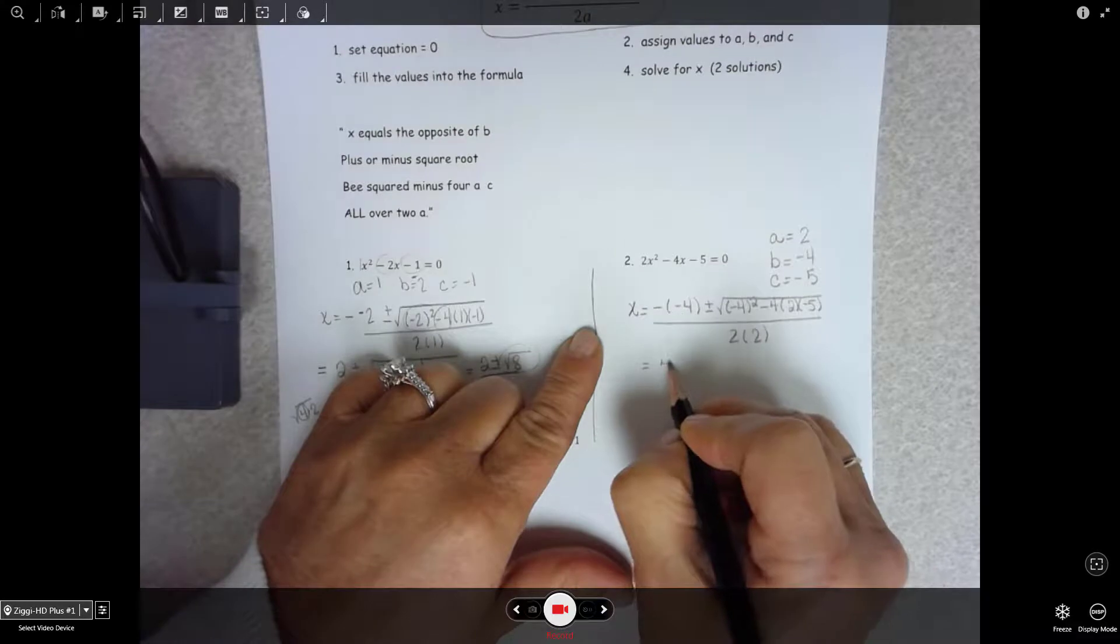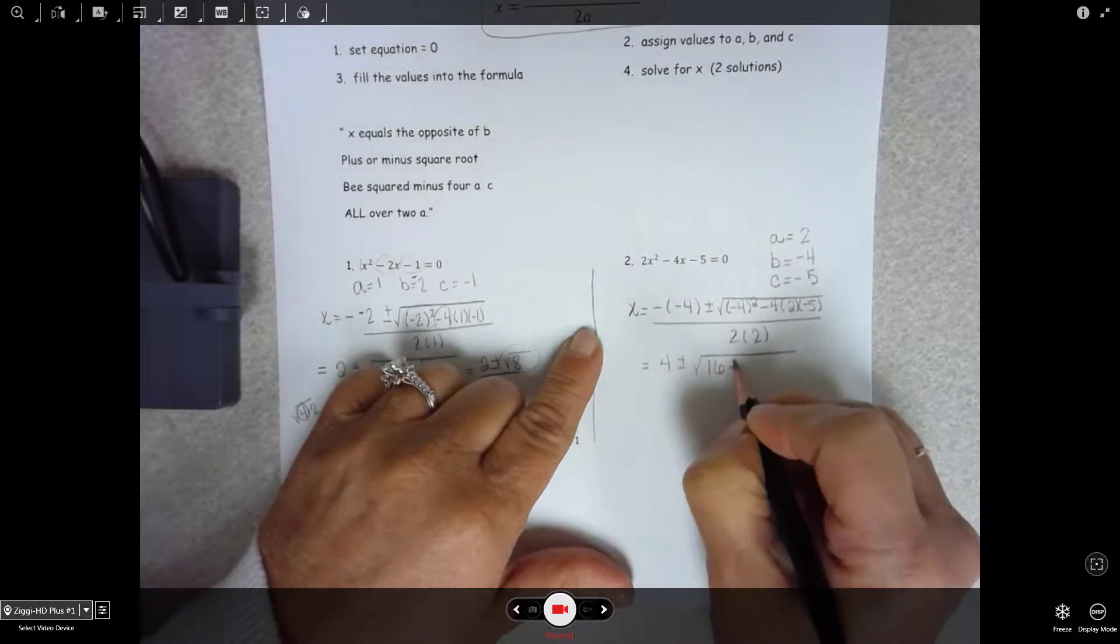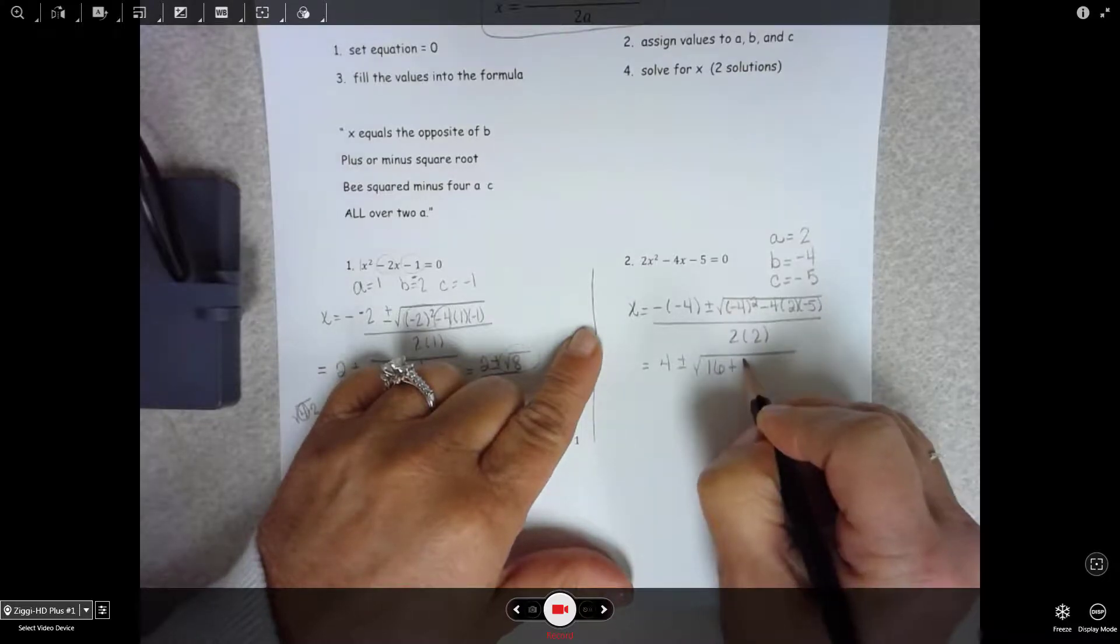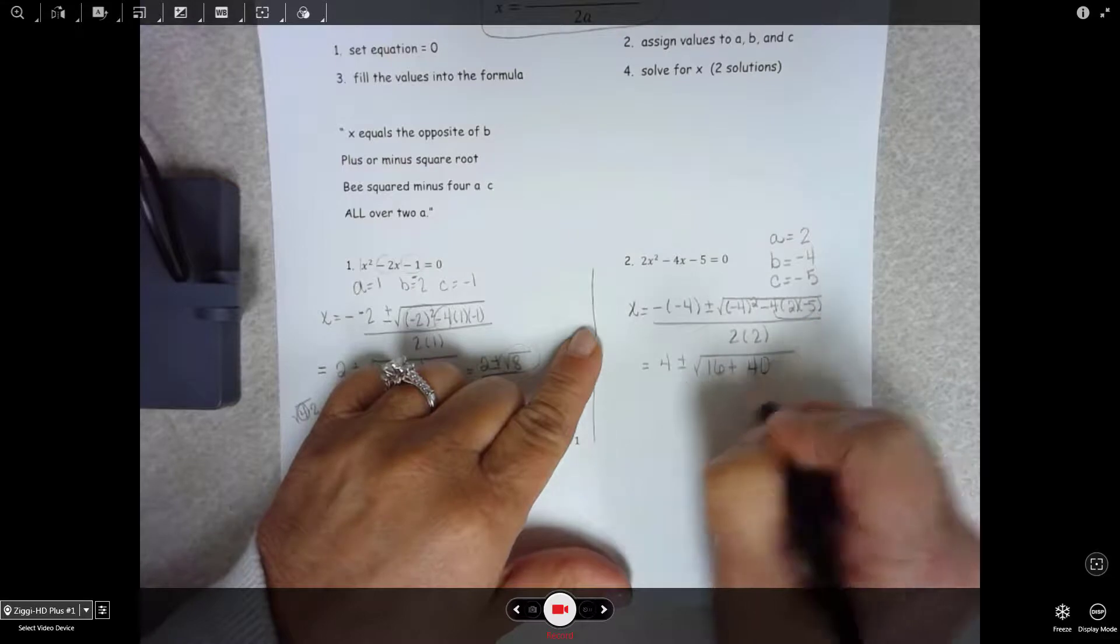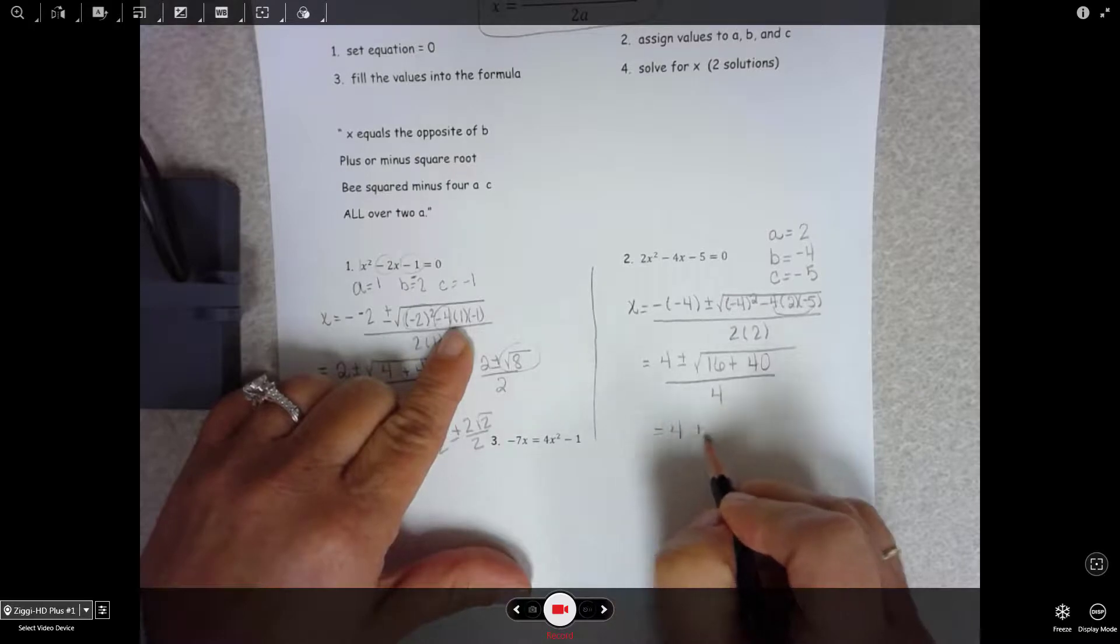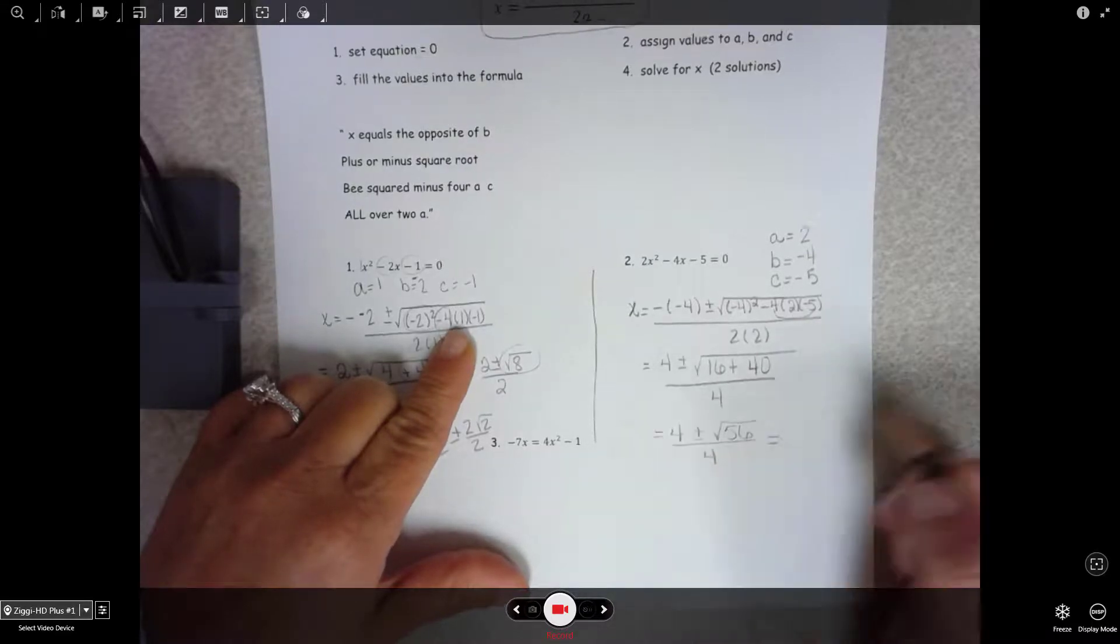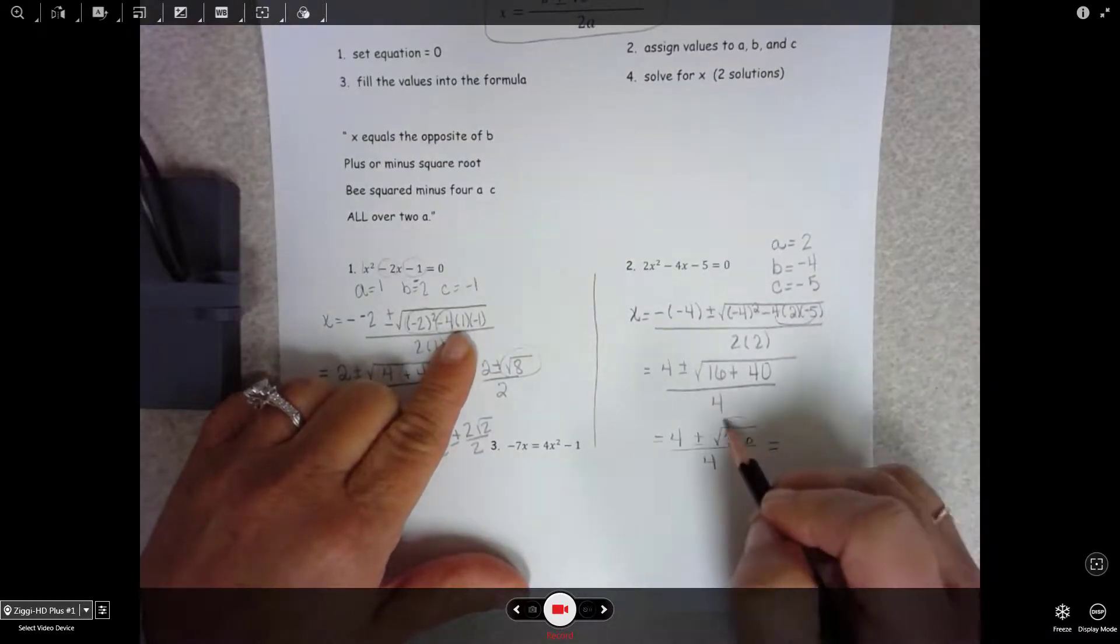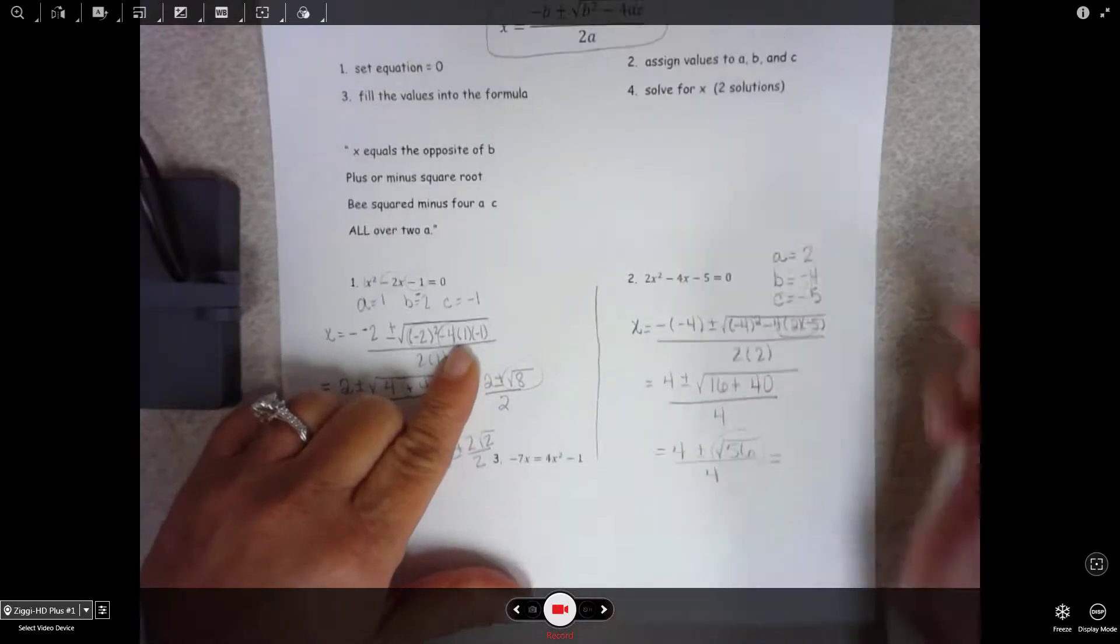We have positive 4 plus or minus the square root of 16 plus positive 20 times 2 is 40 over 4. 4 plus or minus square root of 56 all over 4. And you need to come over here and simplify that. All right. So let's see.